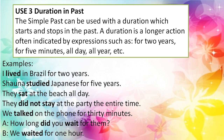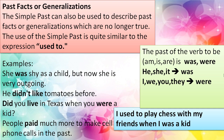We use duration in the past. The simple past can be used with a duration — a longer action often indicated by expressions such as 'for two years,' 'for five minutes,' 'all day,' 'all year,' etc. Examples: 'I lived in Brazil for two years.' 'Shawana studied Japanese for five years.' 'They sat at the beach all day.' 'They did not stay at the party the entire time.' 'We talked on the phone for 30 minutes.' 'How long did you wait for them?' — 'We waited for one hour.' Specific time.